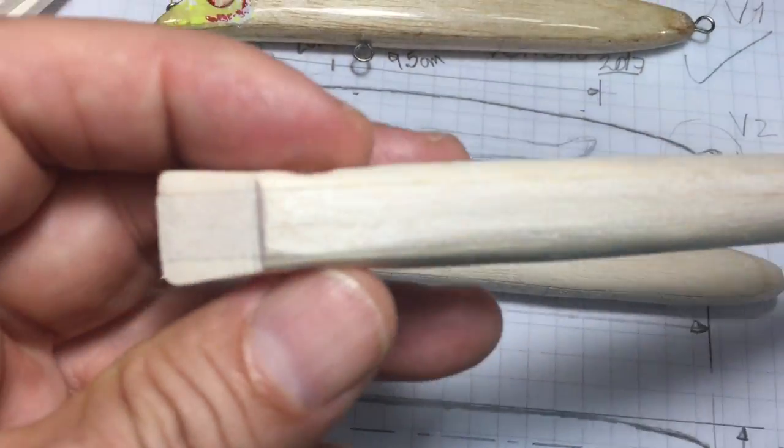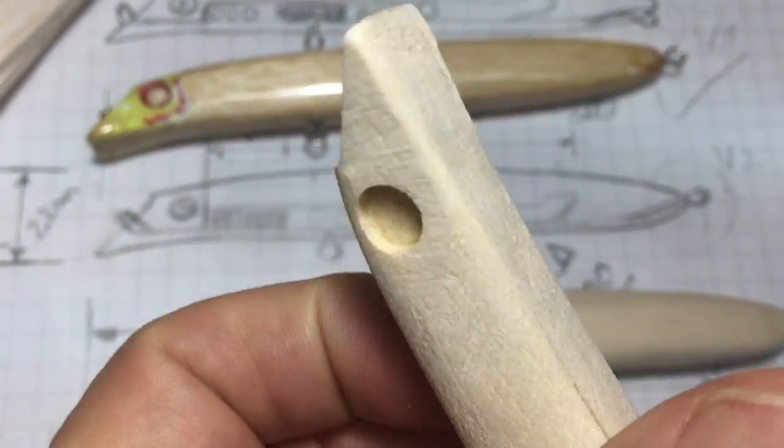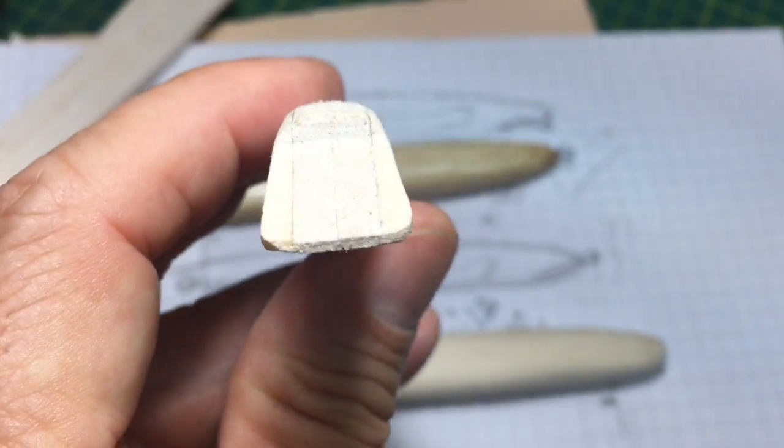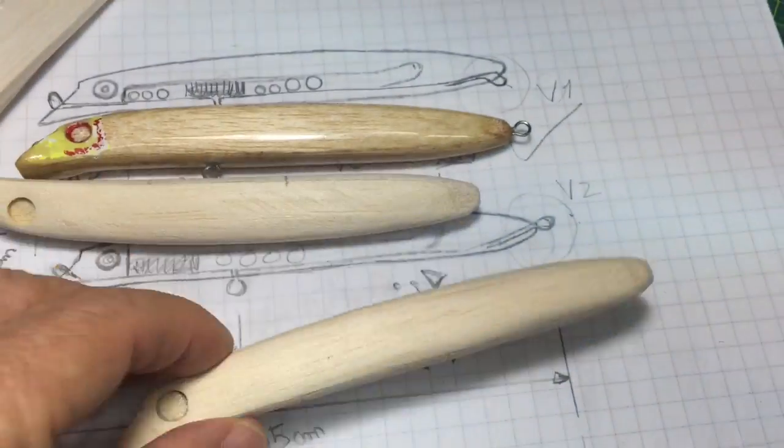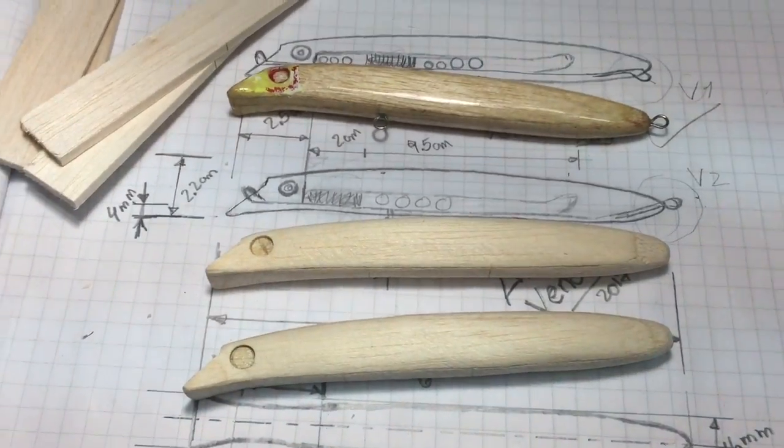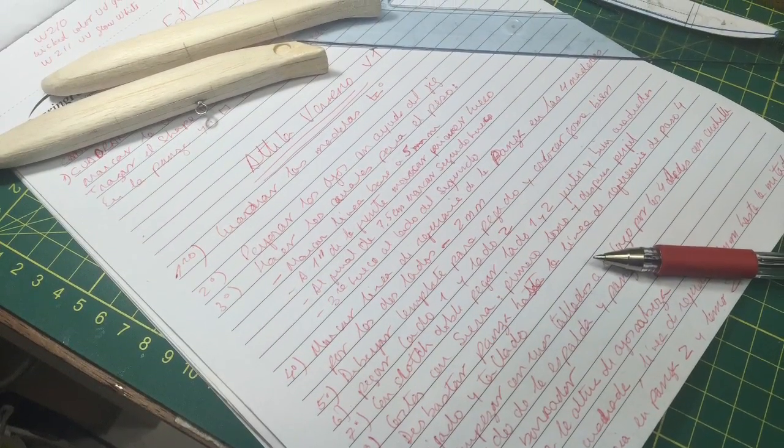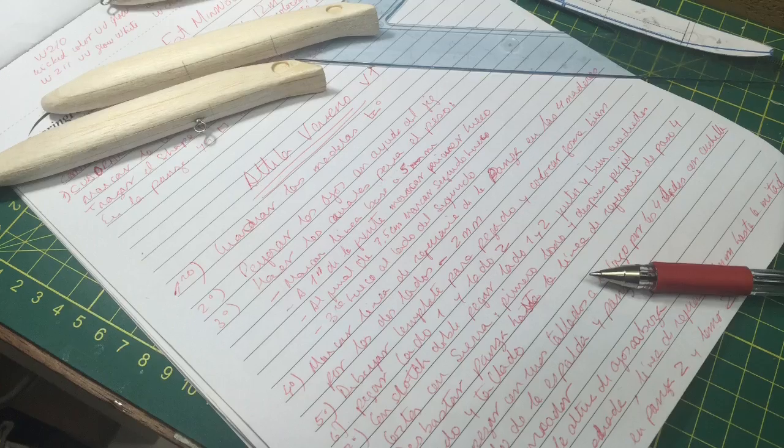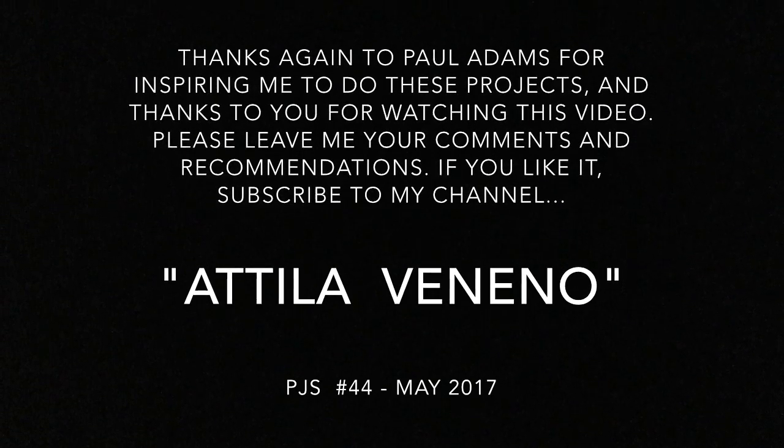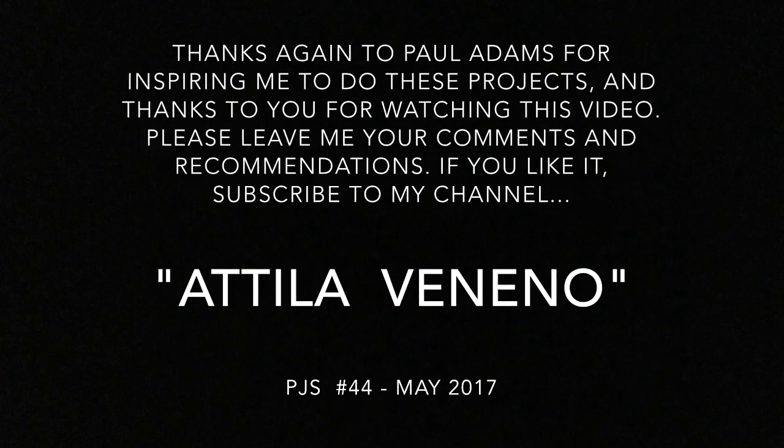Here, these are other ones that I already carved. I like them very much. So this is the product. These are some notes that I wrote while I was doing the project. In my next video, I will show how to do the Attila Veneno. Thank you for watching.